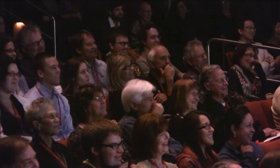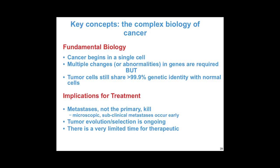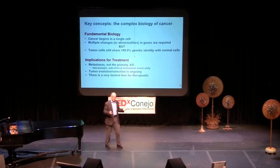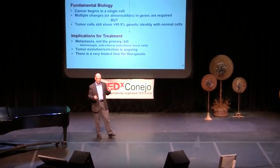The fundamental concepts I'd like to leave with you are outlined on this slide. First, cancer begins in a single cell and acquires multiple changes, multiple genetic abnormalities. But despite that, a cancer cell remains very, very similar to the normal cell, which explains why so many of our treatments have adverse effects on normal cells. The implications for treatment are that metastases — what actually kill patients — occur very early at such small levels you'd need a microscope throughout the whole body to see them. Tumor evolution continues even when treatment is commenced, and there is very, very limited time for intervention.